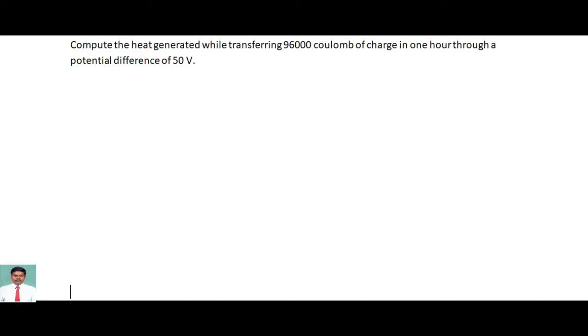Compute the heat generated while transferring 96,000 coulombs of charge in one hour through a potential difference of 50 volts. So here first we write the given parameters.